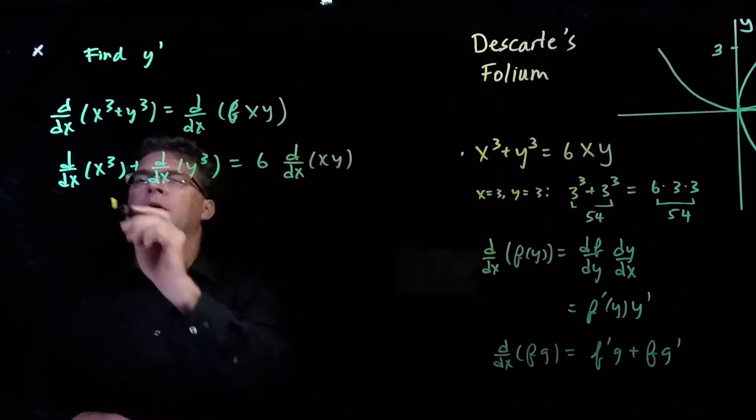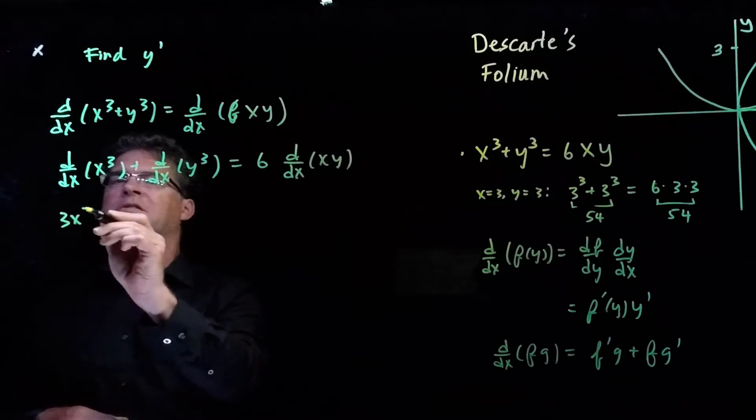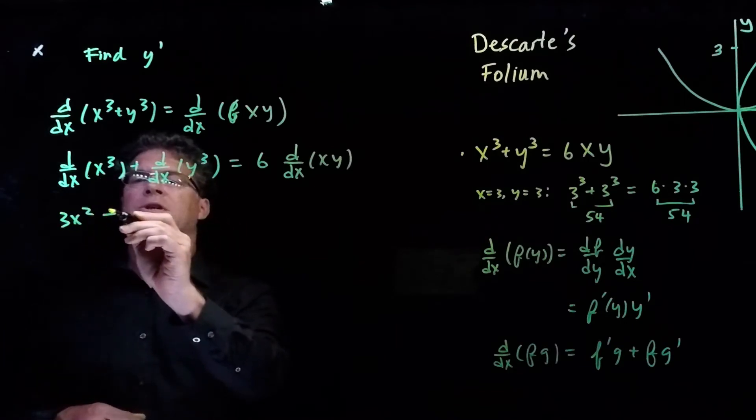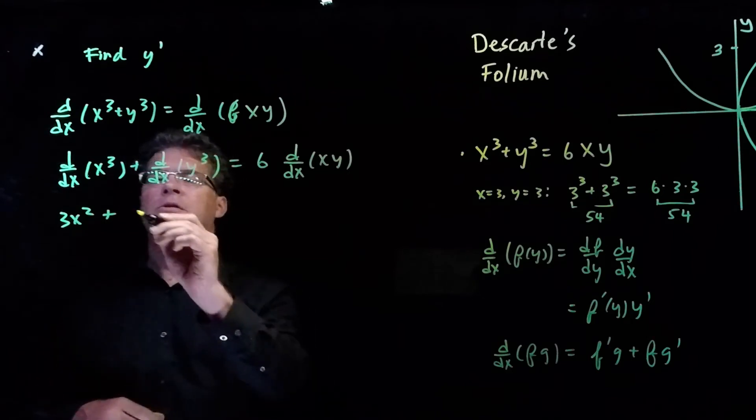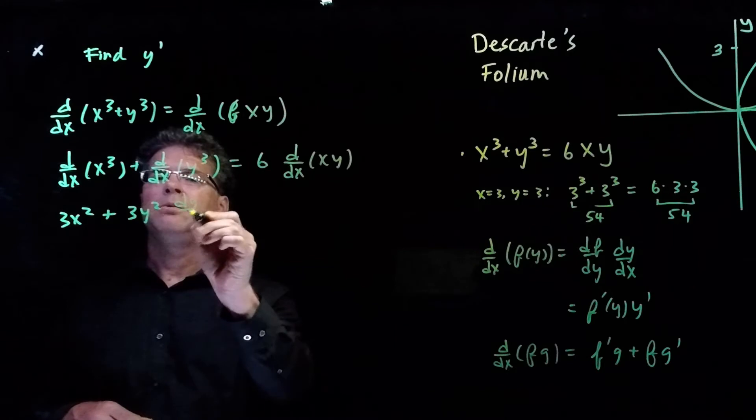Derivative with respect to x of x cubed is 3x squared. When we differentiate this, we need to use the chain rule. So we have that this is equal to 3y squared times dy/dx.